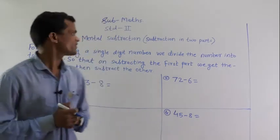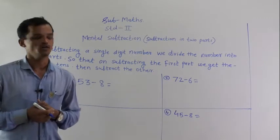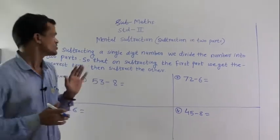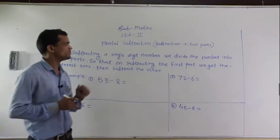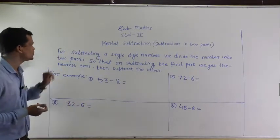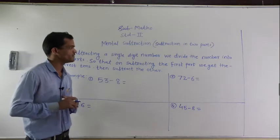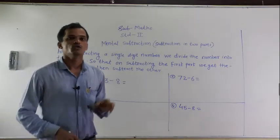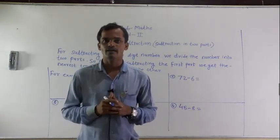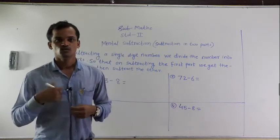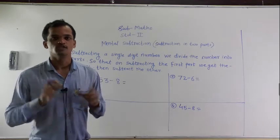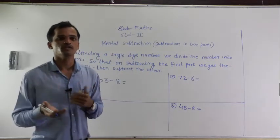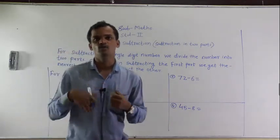Dear student, today we will see how to subtract mentally — mental subtraction in two ways. For subtracting a single digit number, we divide the number into two parts so that on subtracting the first part, we get the nearest ten, then subtract the other. Today we will learn how to subtract a single digit number from a two digit number mentally. There is no need to calculate using pencil or paper; we will subtract mentally and write the answer.